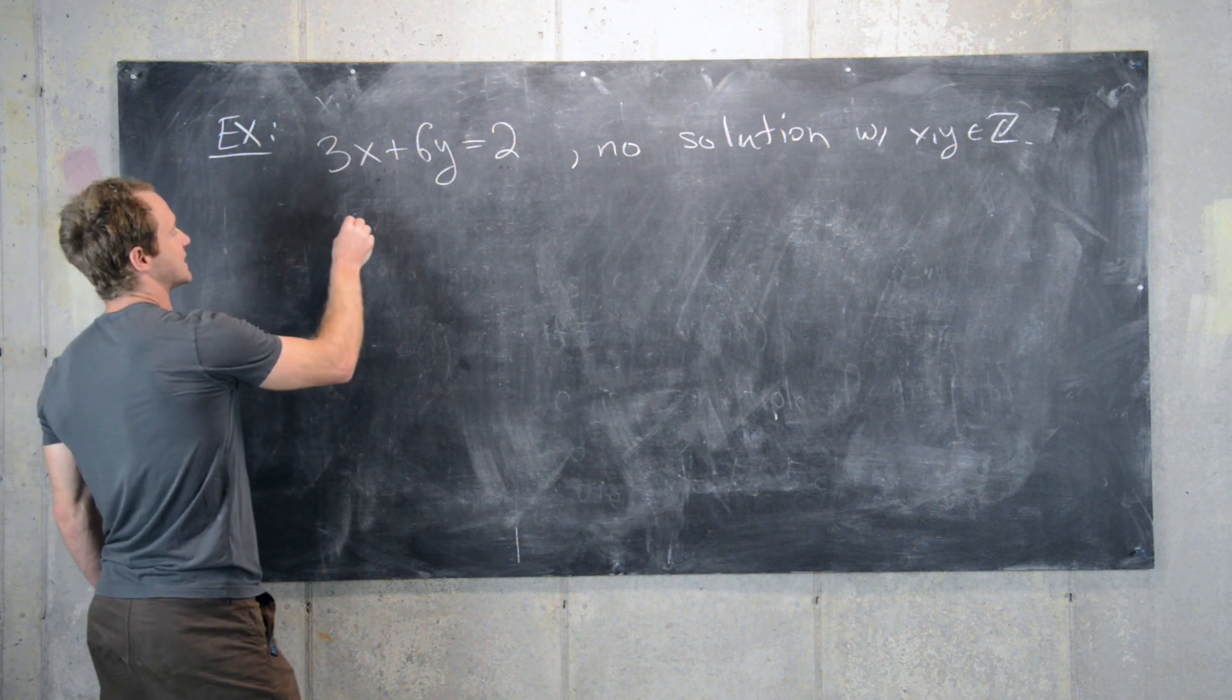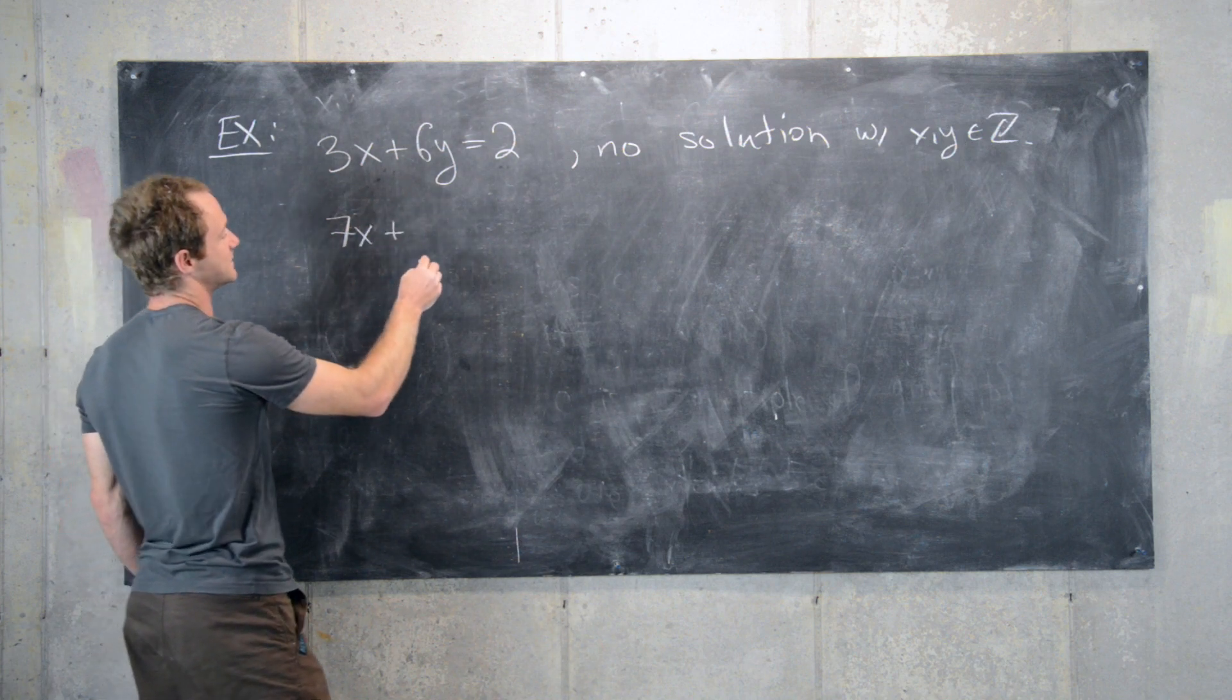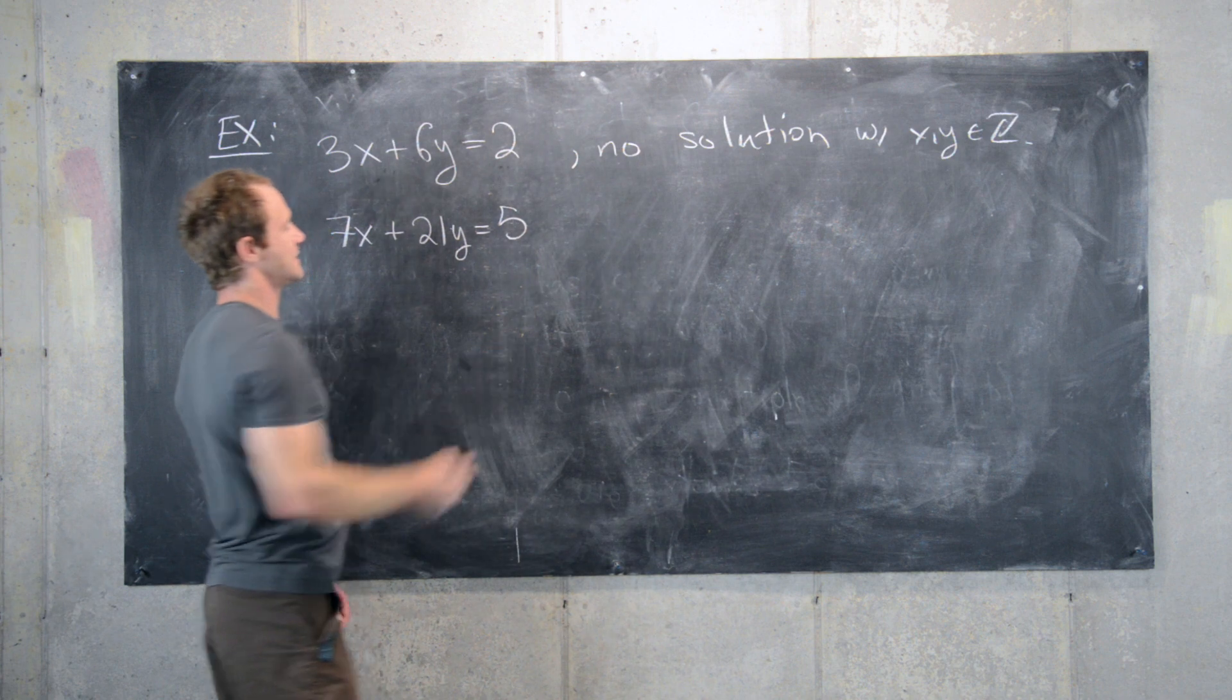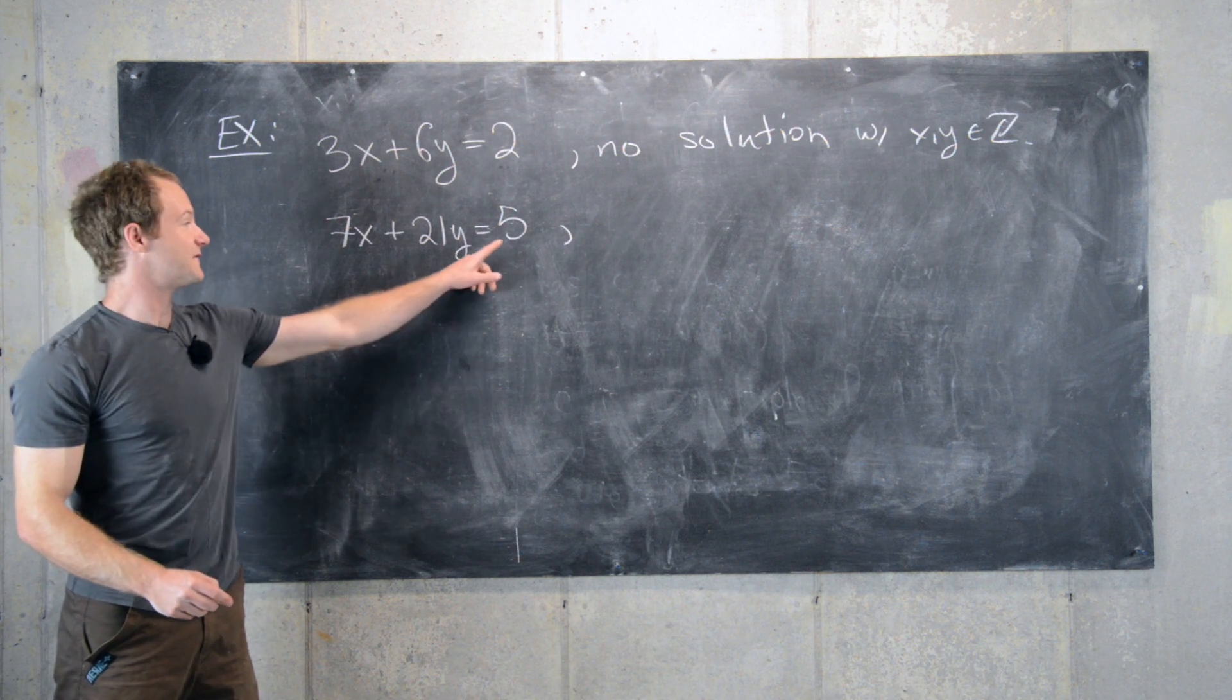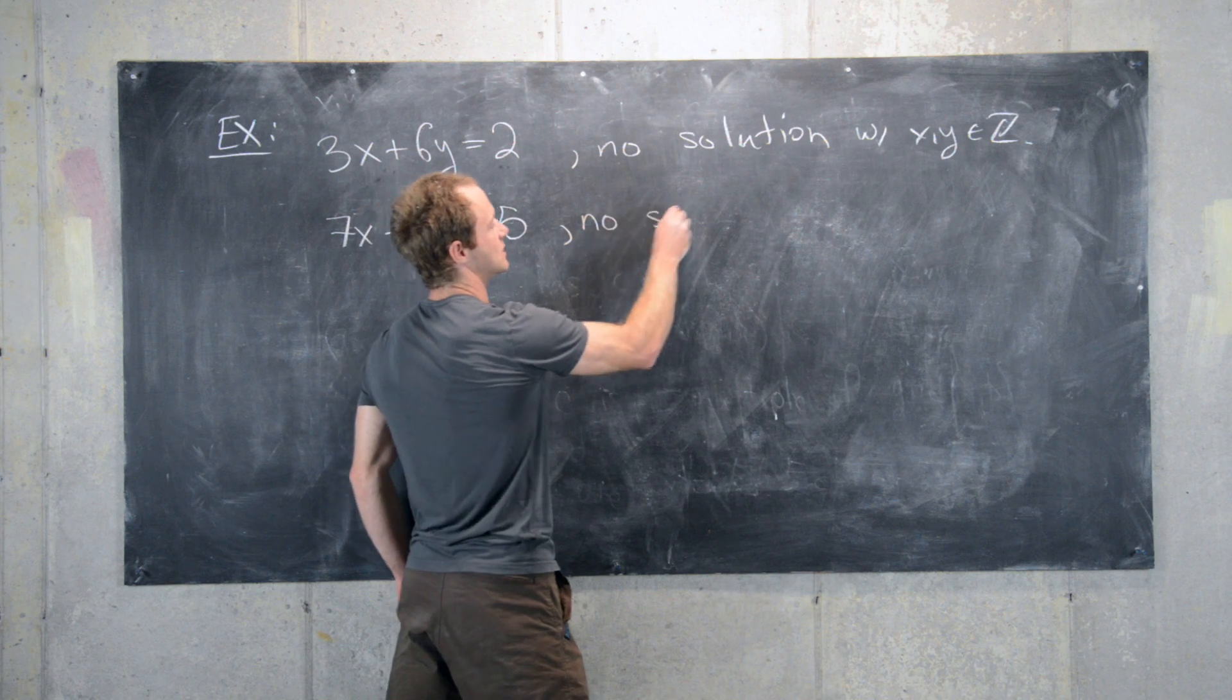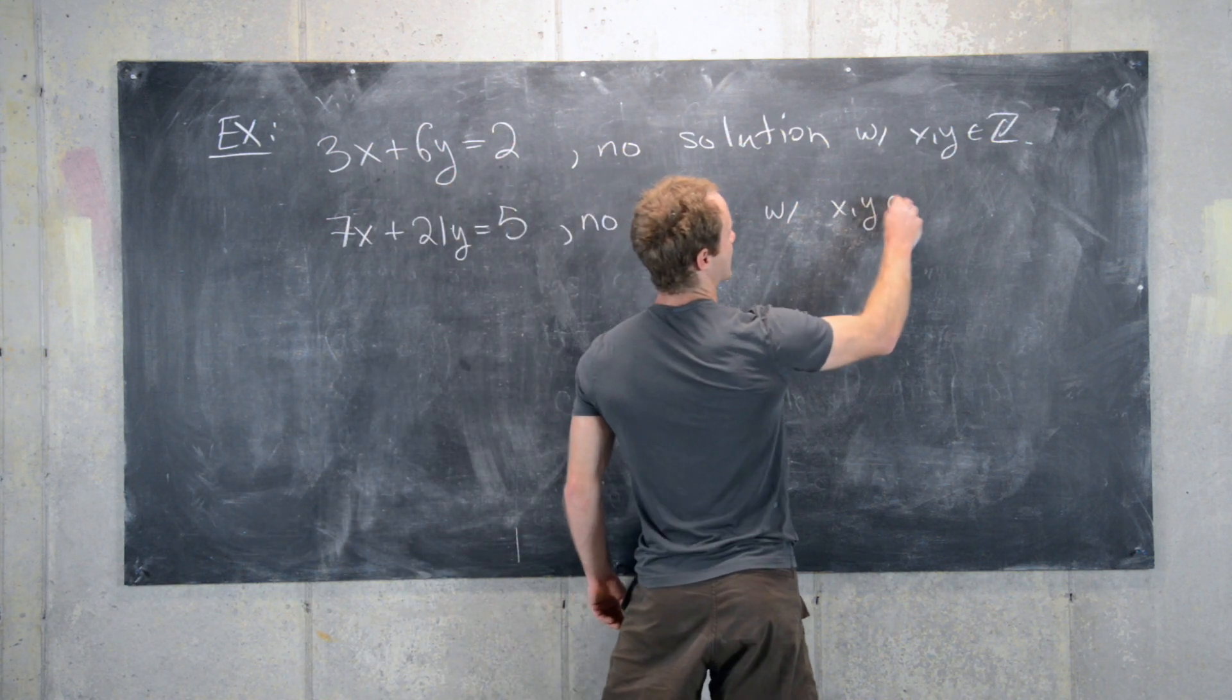Now let's look at 7x plus 21y equals 5. Since the gcd of 7 and 21 is 7, and 5 is not a multiple of 7, there's also no solution with x and y integers.